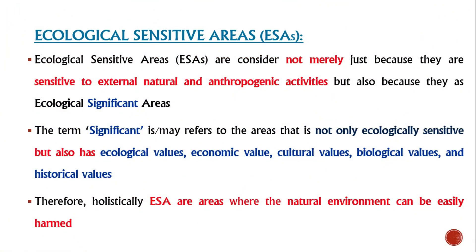An area designated as an eco-sensitive area is not merely because it is sensitive to external natural and anthropogenic activities, but also because it is an ecologically significant area. That is, areas are not only ecologically sensitive, but are also ecologically, economically, culturally, biologically, and historically significant. Therefore, holistically, ESAs are areas where the natural environment can be easily harmed and therefore such areas need to be conserved.